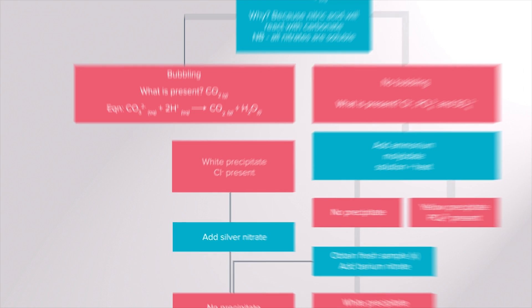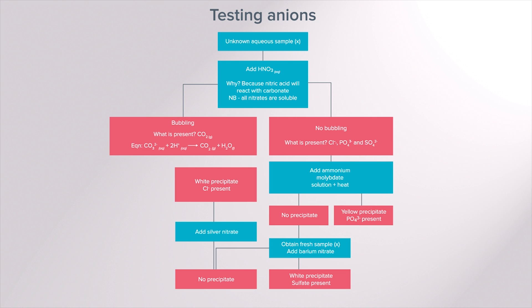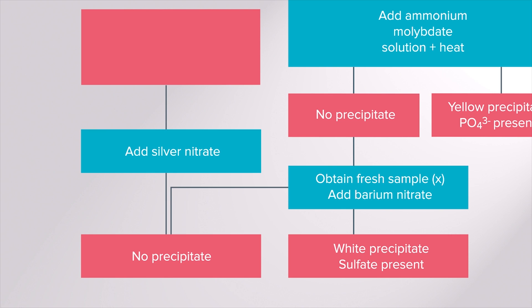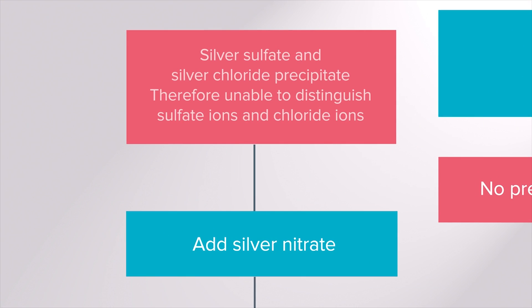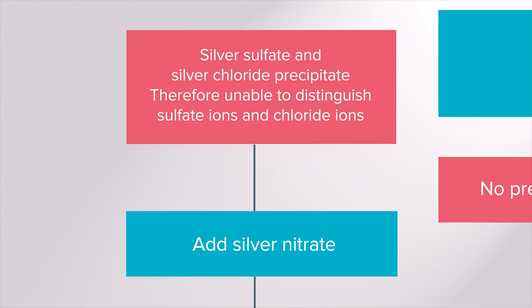Please note that the logical steps in distinguishing between sulphate ions and chloride ions involves firstly eliminating the sulphate ions by using barium nitrate. If we had added silver nitrate first then both silver sulphate and silver chloride would have precipitated and we could not have distinguished between the presence of sulphate ions and chloride ions in the sample.